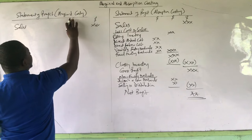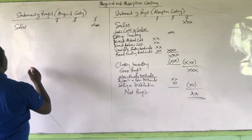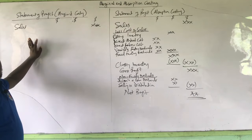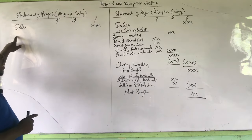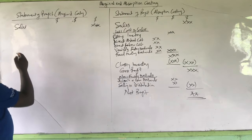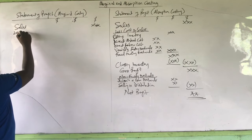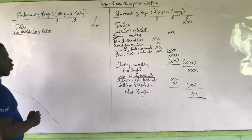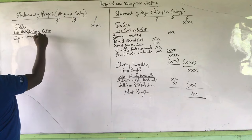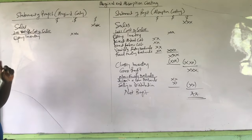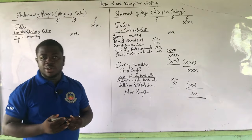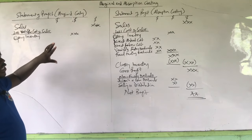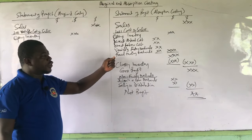Now let us focus on the marginal costing — that is where there is going to be a change. When we come to the marginal costing, it is quite different. We have our sales figure, and then we take our cost of sales. Over here in absorption, we took out the full cost of sales. But when we come to the marginal costing, we are not going to take out the total cost of sales — only the variable component. So you say less variable cost of sales or less marginal cost of sales. Instead of taking out the full cost of sales, we deduct the variable cost of sales.